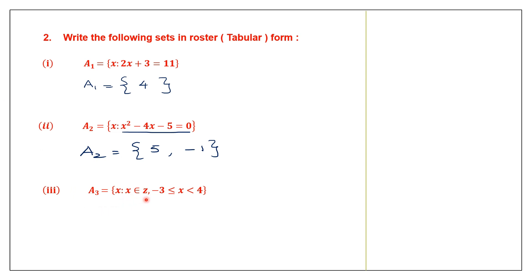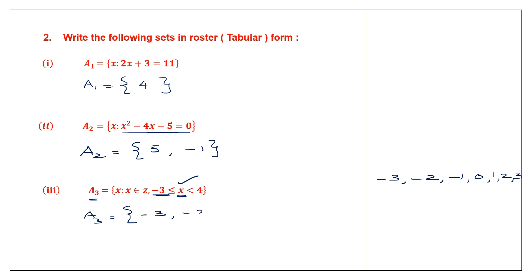Question 3. X is such that X belongs to integers — that means positive and negative numbers. The condition is X is greater than or equal to minus 3 and X is less than 4. So we write all integers starting from minus 3 up to but not including 4: minus 3, minus 2, minus 1, 0, 1, 2, and 3. These are the elements of this set.